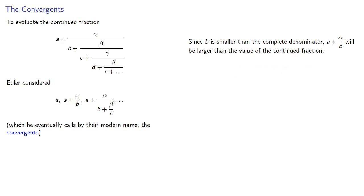For the next convergent, since b is smaller than the complete denominator, a plus alpha over b will be larger than the value of the continued fraction.